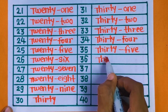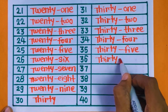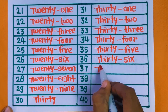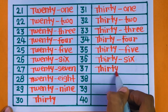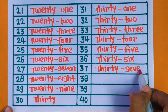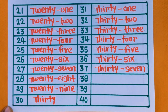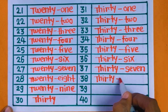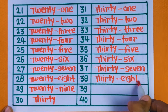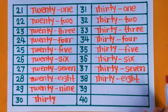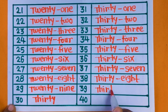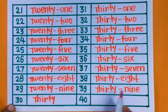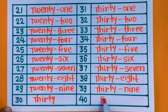Next is 36 — THIRTY SIX. 36. 37 — THIRTY SEVEN. 37. 38 — THIRTY EIGHT. 38. Next is 39 — THIRTY NINE. And 40 — FORTY. 40.